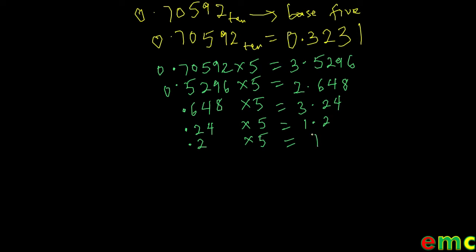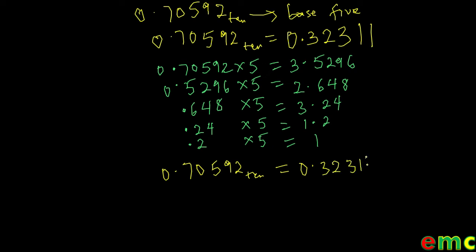So we stop our multiplication at this point because we continuously do our multiplication until we arrive at a whole number. Therefore, 0.70592 in base 10 is equal to 0.32311 in base 5. Whatever base you are converting to will be the multiplier — if you are converting to base 6, you multiply by 6; if to base 7, you multiply by 7 — and you continue until you arrive at a whole number.